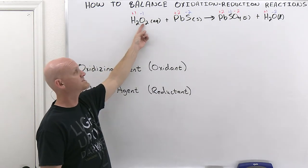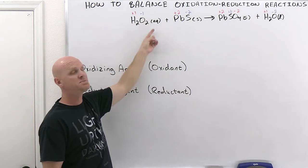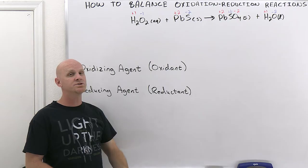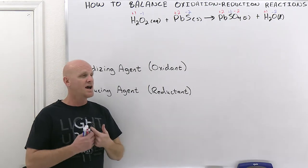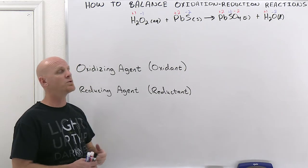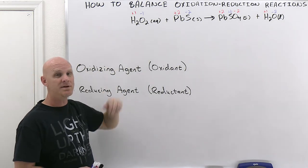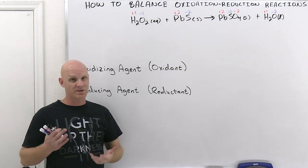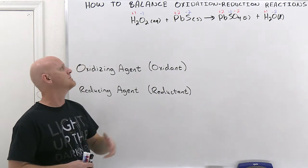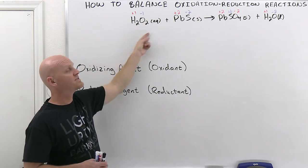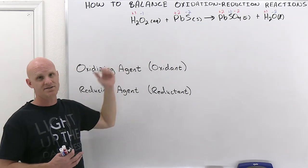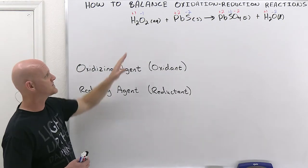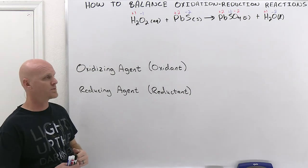You could also say, instead of just naming the element oxygen, you could name the entire reactant species it's a part of. So you could say that H2O2, hydrogen peroxide, is being reduced — both statements are true. Whether you identify the specific element within a compound or the entire chemical species, on the reactant side you can say it's the element or species being reduced.